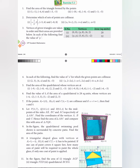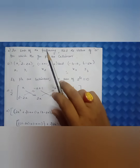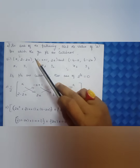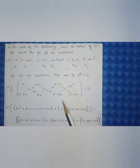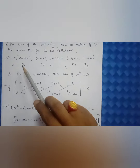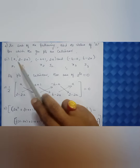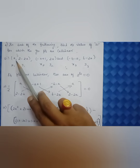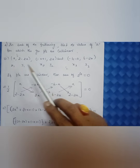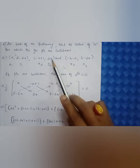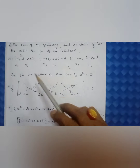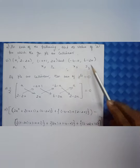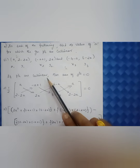We will continue with the fourth sum from Exercise 5.1: in each of the following, find the value of 'a' for which the given points are collinear. I have taken the second subdivision — the first subdivision can be done as homework. The coordinates are (a, 2−2a), (−a+1, 2a−4), (−a, 6−2a), named as (x₁, y₁), (x₂, y₂), (x₃, y₃).